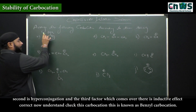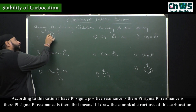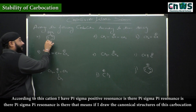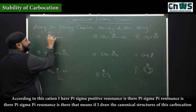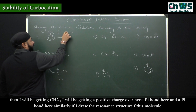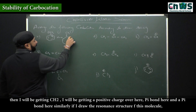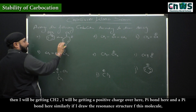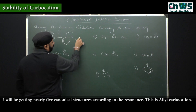Check this carbocation — this is known as the benzyl carbocation. For this carbocation, pi-pi-sigma-positive resonance is there, pi-sigma-pi resonance is there. If I draw the canonical structures of this carbocation, I'll be getting CH2 with a positive charge and pi bonds. Similarly, if I draw the hyperconjugation structures of this molecule, I'll be getting nearly five canonical structures according to the resonance.